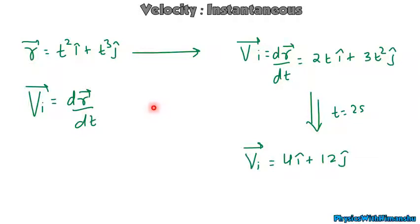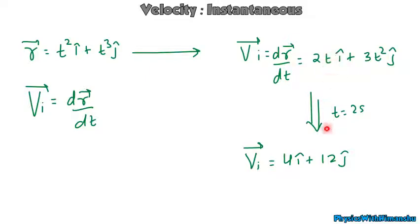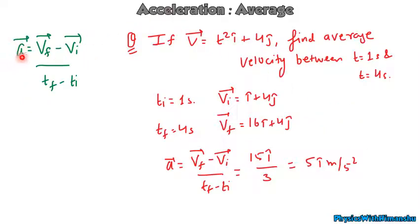Similarly, we can find instantaneous velocity. Average velocity is calculated over a time interval where both initial and final times are given, but instantaneous velocity is found at a single instant — only one time is given. If position is t²·i-cap plus t³·j-cap, instantaneous velocity is dr/dt: differentiating gives 2t·i-cap plus 3t²·j-cap. At t = 2s, velocity = 4·i-cap plus 12·j-cap m/s.